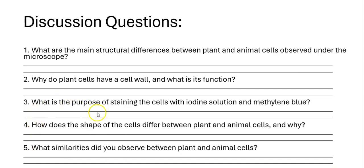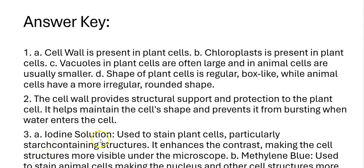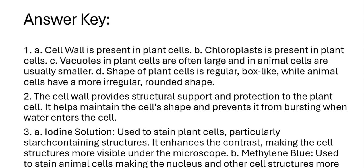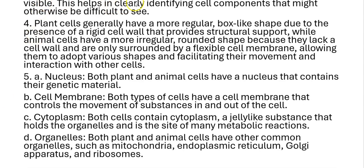Third question: what is the purpose of staining cells with iodine solution and methylene blue? Iodine solution is used to stain plants, particularly starch-containing structures; it enhances the contrast, making cell structures more visible under the microscope. Methylene blue is used to stain animal cells, making the nucleus and other cell structures more visible, helping to clearly identify cell components that might otherwise be difficult to see.